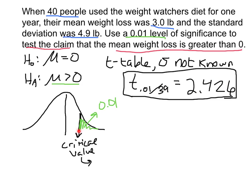2.426 is the boundary between the lower 99% and the upper 1%. If our test statistic falls beyond 2.426 in that zone, then we're going to reject the null hypothesis — we'll say there's evidence to support the alternative. So, using our sample information, we want to calculate the test statistic.